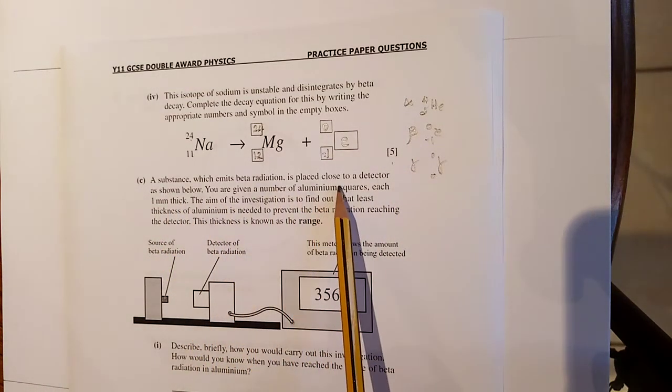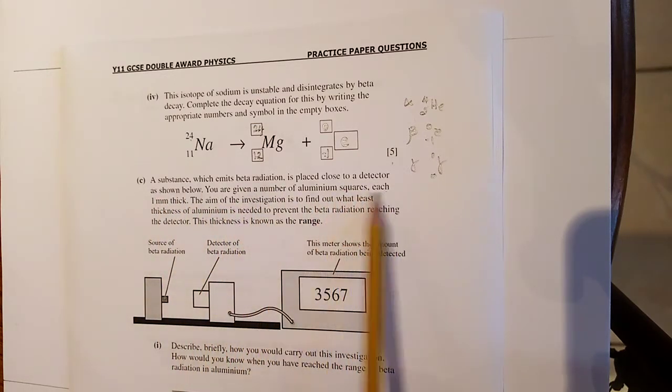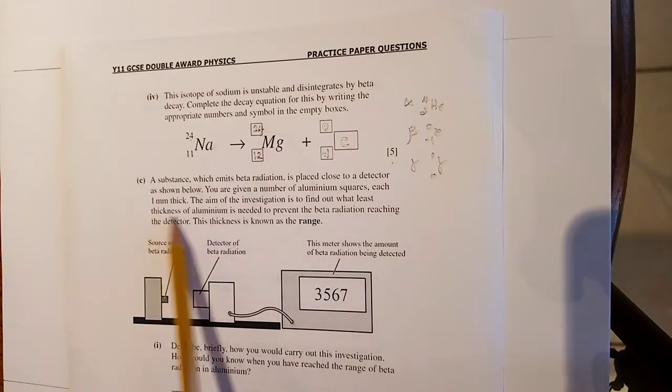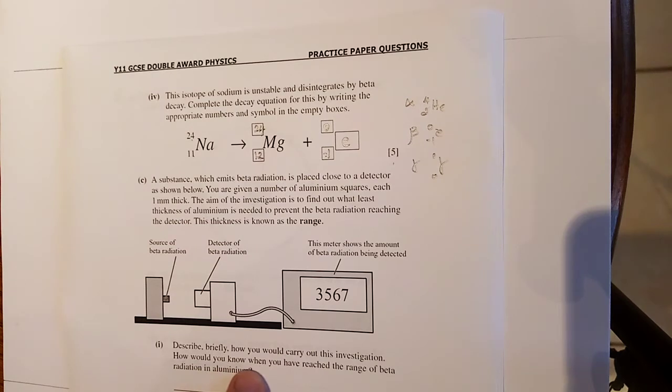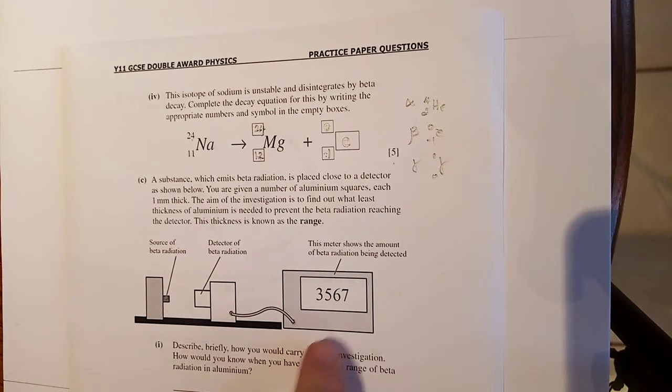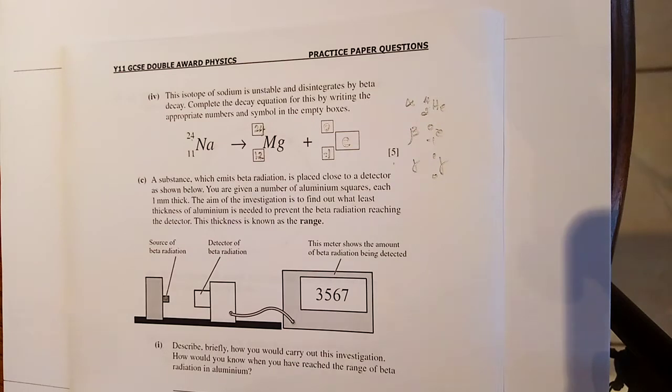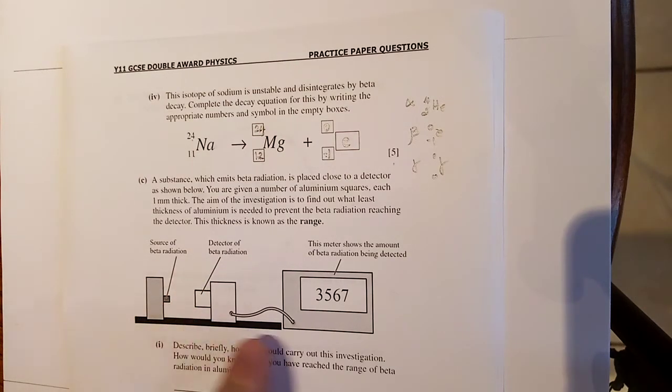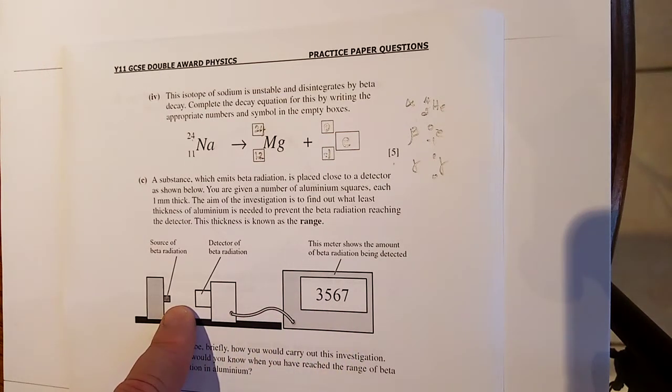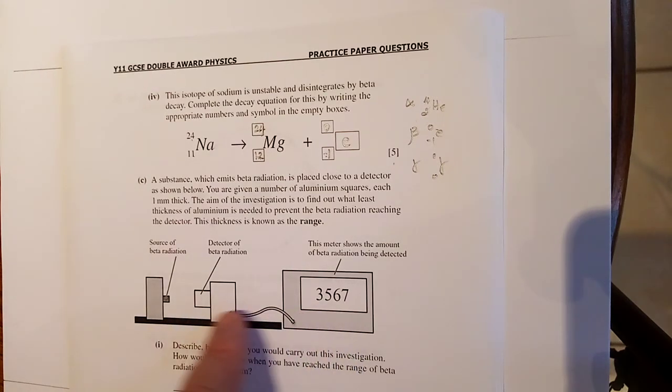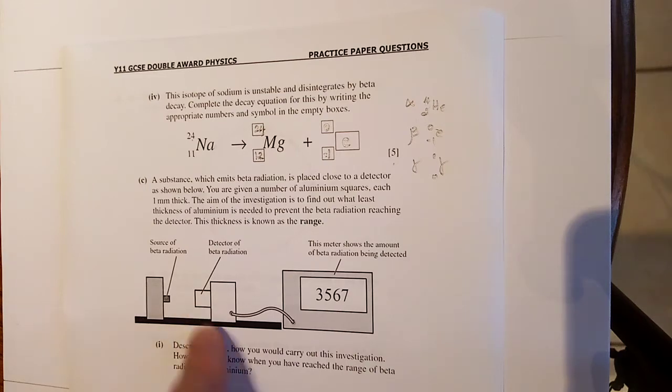A substance which makes beta radiation is placed close to your detector as shown below. You are given a number of aluminum squares each one millimeter thick. The aim of the investigation is to find out what least thickness of aluminum is needed to prevent the beta radiation reaching the detector. The thickness is known as the range. Describe briefly how you carry out this investigation. How would you know when you have reached the range of beta radiation in aluminum? Remember this will come down to be a figure, and it will not go any below.